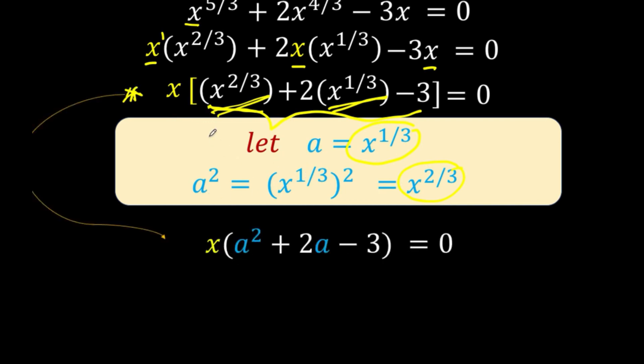So we now have this. We copy x. Instead of x raised to 2 thirds, we use our substitution a squared. And instead of x raised to 1 third, we use our substitution a. We copy the 2, copy the minus 3, copy equals 0. Let's continue in the next page.